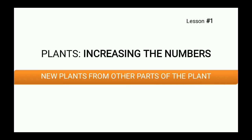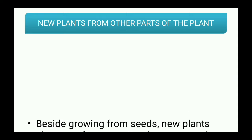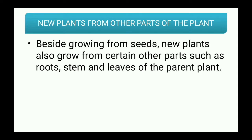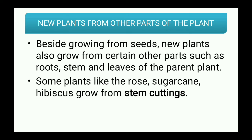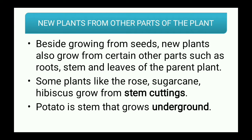Besides growing from seeds, new plants also grow from certain other parts such as roots, stem, and leaves of the parent plants. Some plants like rose, sugarcane, and hibiscus grow from stem cuttings. Potato is a stem that grows underground — let us study more about potatoes.